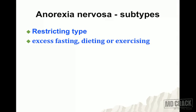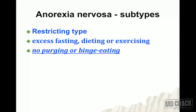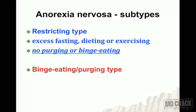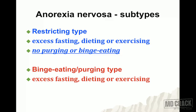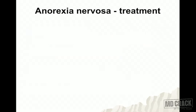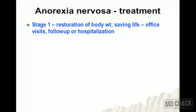The subtypes of anorexia nervosa are: first, the restricting type, in which there is excessive fasting, dieting, or exercising with no purging or binge eating behavior. The second subtype is the binge eating/purging type of anorexia nervosa, which is comparatively rare — there is excessive fasting, dieting, or exercising, and purging or binge eating is also present.